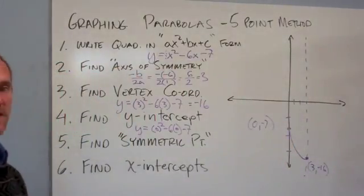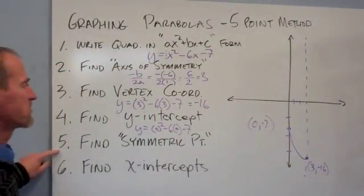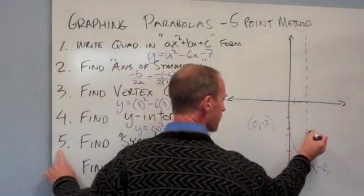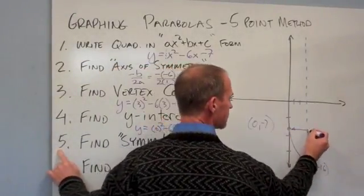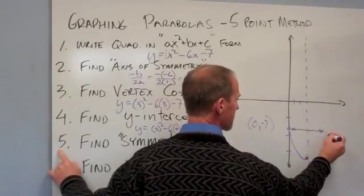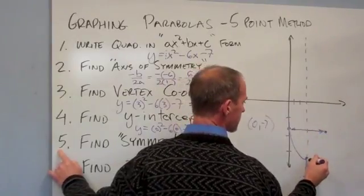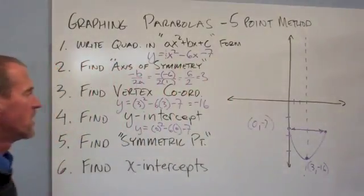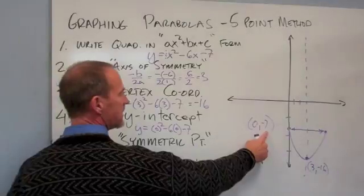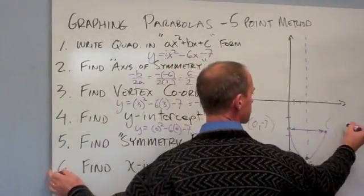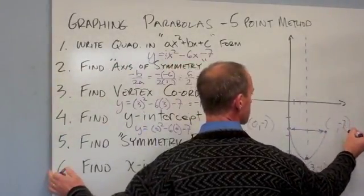Well, because they're symmetrical, we can now find what's called the symmetric point. However far I went here from my axis of symmetry is how far I'm going to go there from the same point to find another mirror image point. My parabola is going to open up like that. Well, what is that point? It's always going to be the same level down. So I know it's going to be something comma negative 7. Alright?